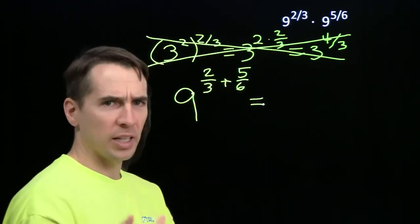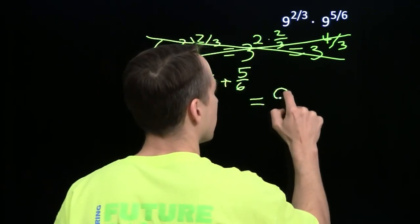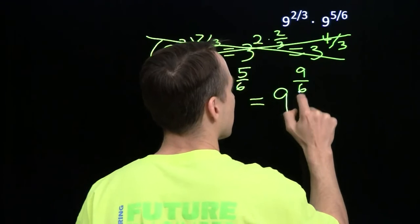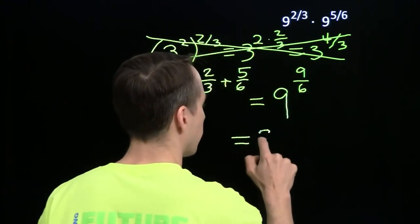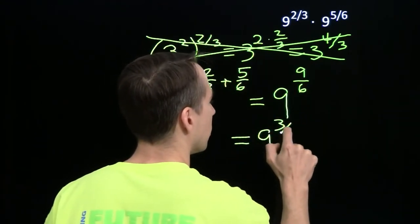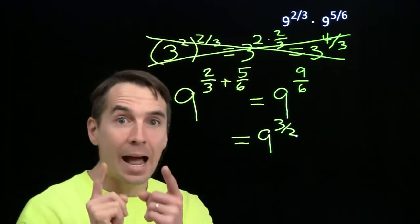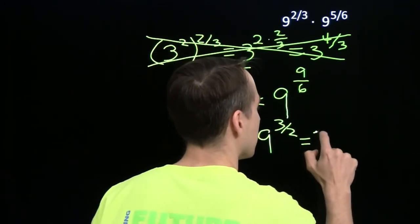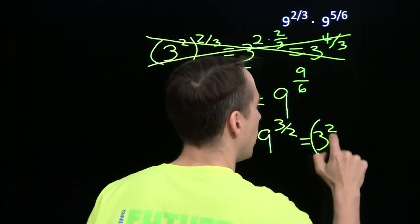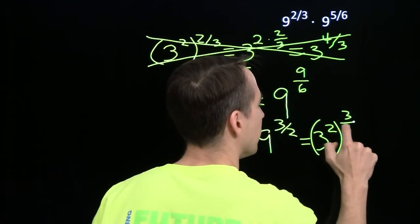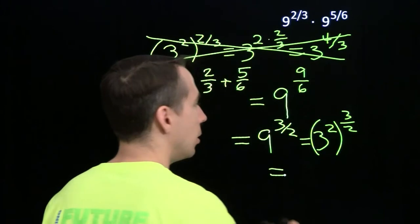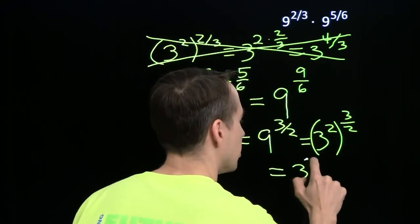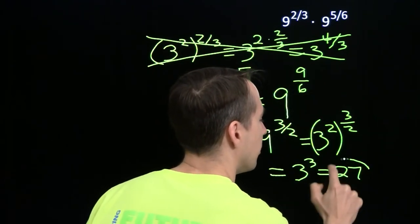And 2 thirds, well, that's 4 sixths. 4 sixths plus 5 sixths is 9 sixths, which is 3 halves. 2 times 3 halves is 3. So this is 3 cubed, which is 27.